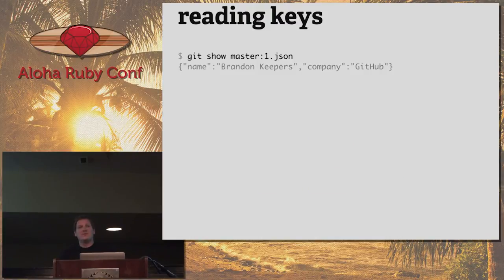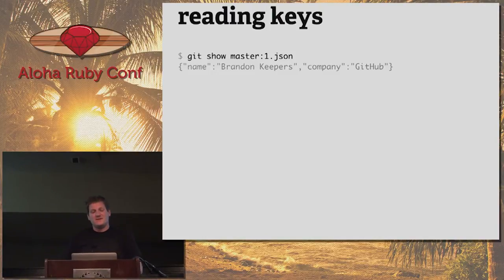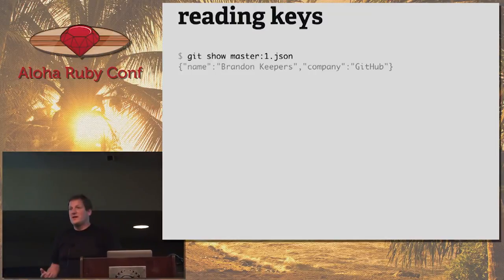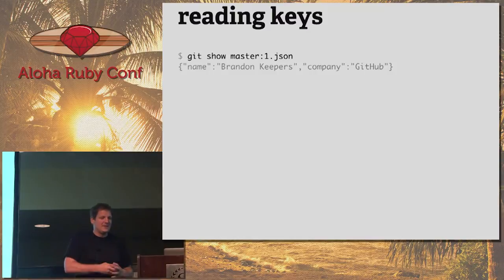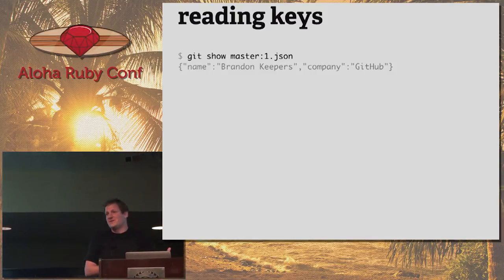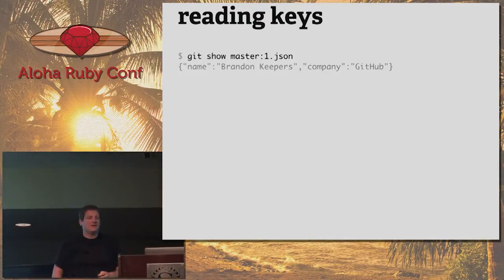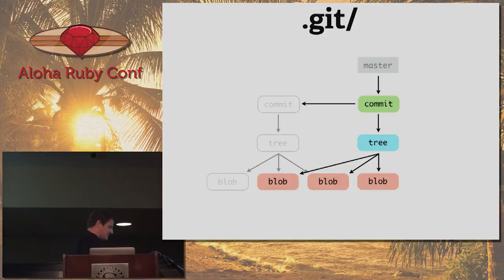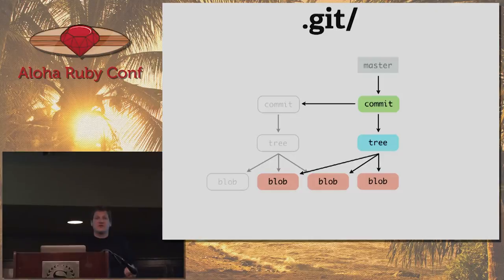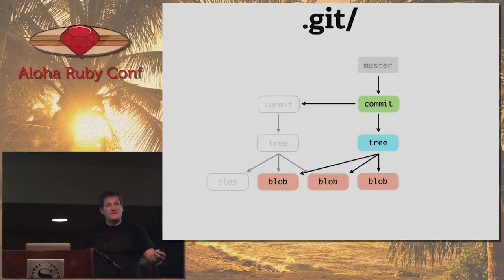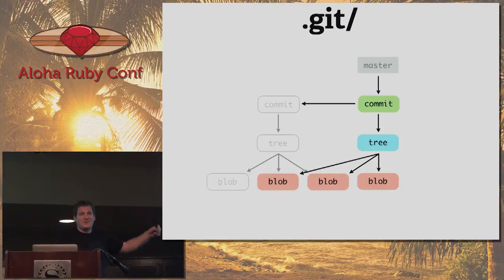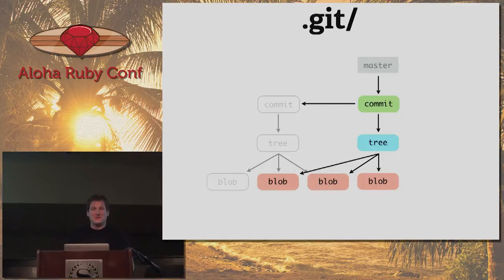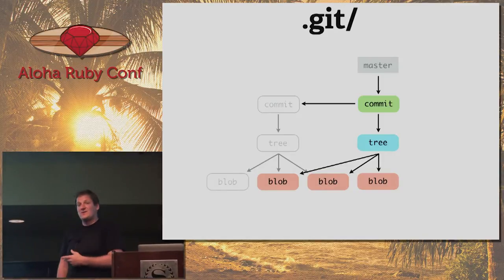Now finally we can read back out the data we stuck in it without the ID changing every time. I can say `git show master:1.json` — the reference colon the ID I gave it when I stored it. This is essentially what we did with the familiar commands earlier: when we added a file and committed, we were just doing those steps. As for revision history, Git keeps track by repeating that process: update the blob contents, get a new blob ID, update the tree, create a new commit, and move the reference to point to the new commit.